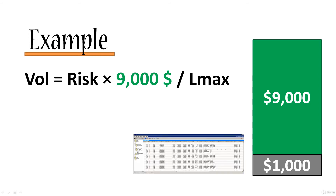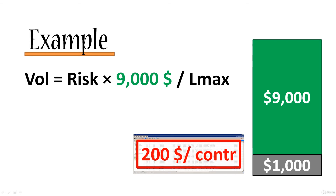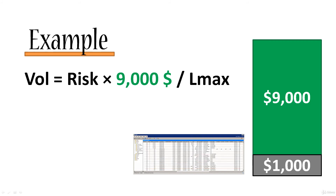Next we go to our transaction history. We look through all of our transactions, exclude anomalies where something went completely wrong or we were using a different trading strategy. For this particular trading strategy, for every negative transaction we divide the amount lost by the number of contracts, and take the maximum of all those ratios. Let's say this gives us $200 per contract — meaning in the worst case scenario, for every contract we invest, we lose $200 according to this trading strategy. We plug that into the formula as LMAX.